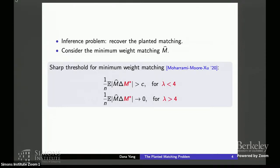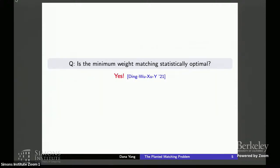So now with the minimum weight matching cleanly analyzed, the natural next step is to ask, can we do better statistically than the minimum weight matching? And the answer is actually you cannot do better. So the minimum weight matching is statistically optimal, and this is answered in our paper this year. And we showed that lambda equals 4 is indeed the sharp statistical threshold for recovery.